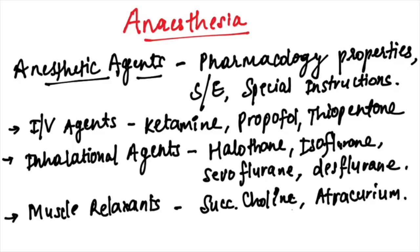Hello everyone. Today we cover the most important topics for last-minute revision for NEET PG. Starting with anesthesia — the anesthetic agents: revise the pharmacological properties, side effects, and special instructions. Divide the intravenous agents — ketamine, propofol, and thiopentane — and the inhalational agents — halothane, isoflurane, sevoflurane, and desflurane. These are most commonly asked.